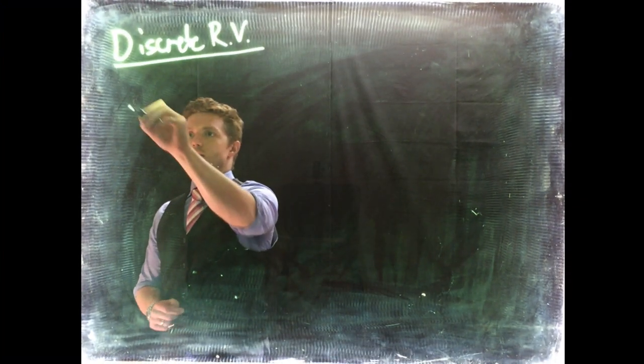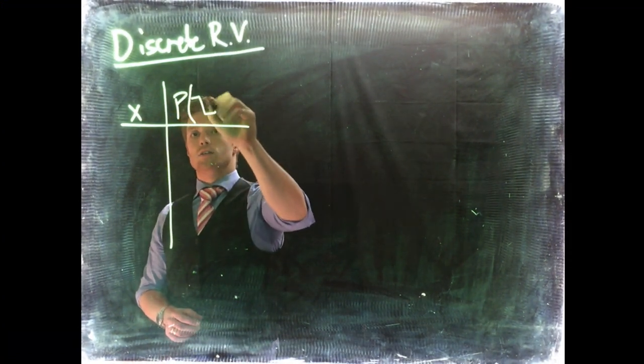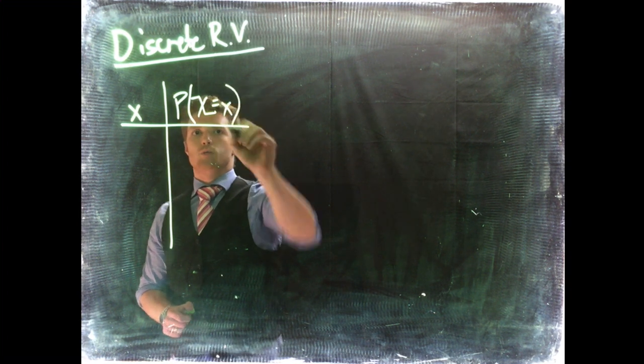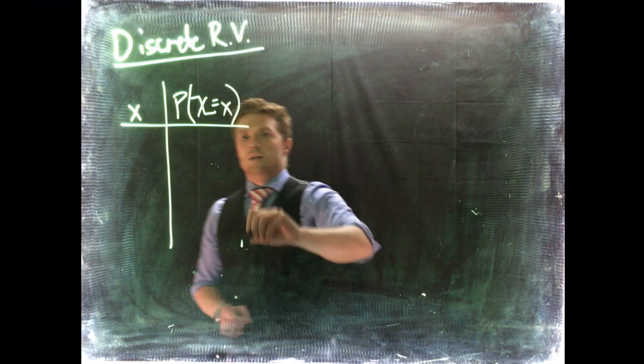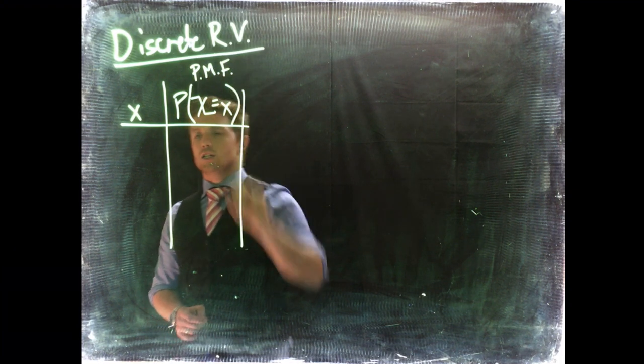So what we do is write our little x as our support and the probability of our discrete random variable equaling a specific member of the support. So this is our probability mass function.